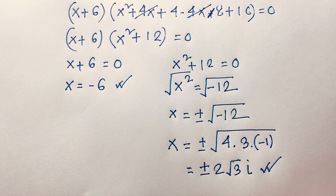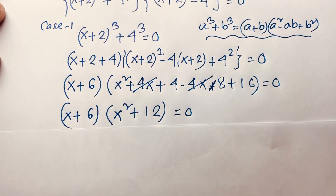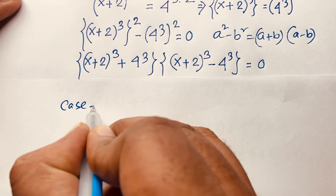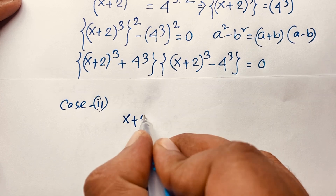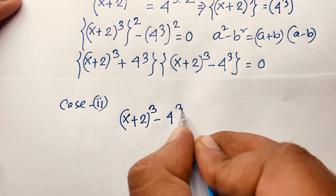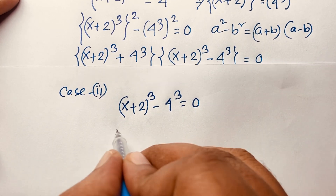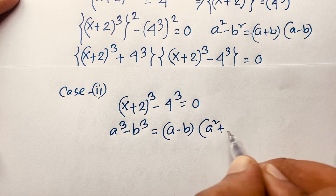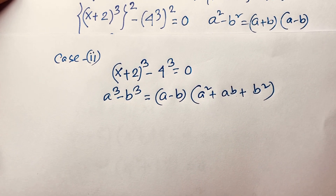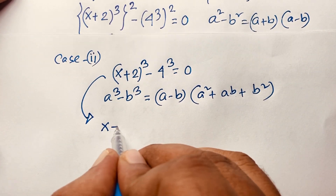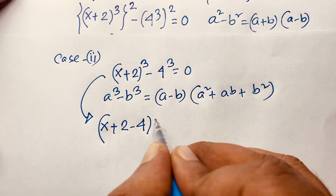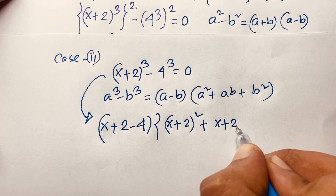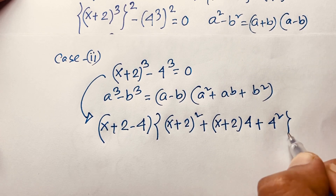Now for Case 2: (x+2)^3 − 4^3 = 0. Applying the difference of cubes formula: a³ − b³ = (a − b)(a² + ab + b²), with a = (x+2) and b = 4. This gives (x + 2 − 4) × [(x+2)² + 4(x+2) + 4²] = 0, which simplifies to (x − 2) × [(x+2)² + 4(x+2) + 16] = 0.